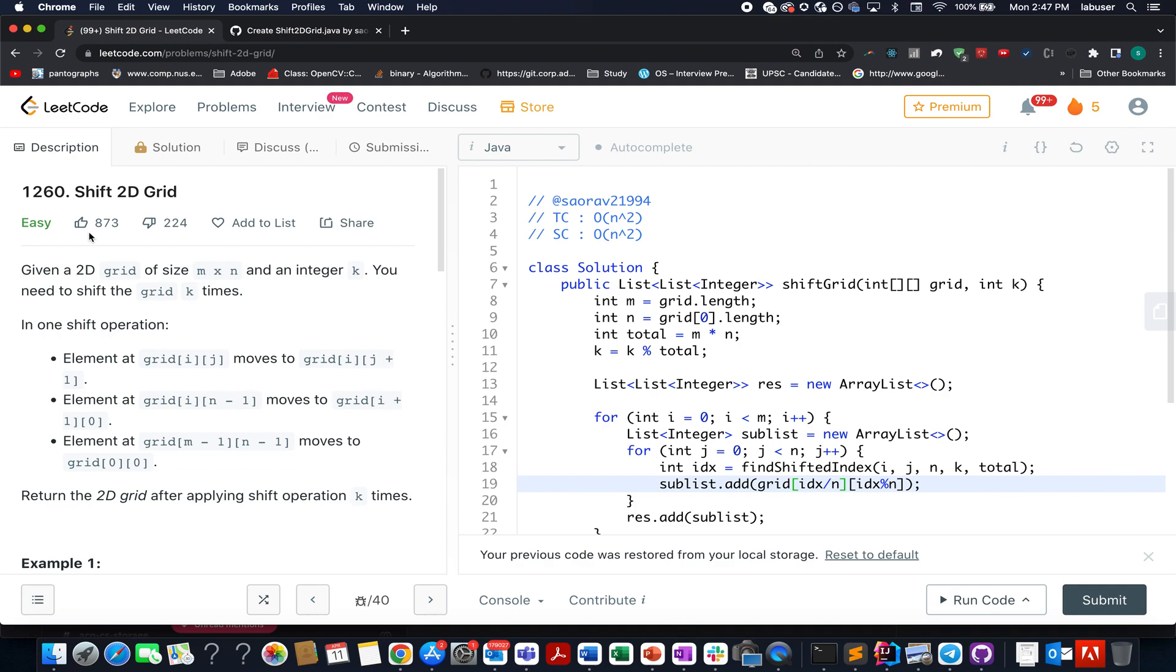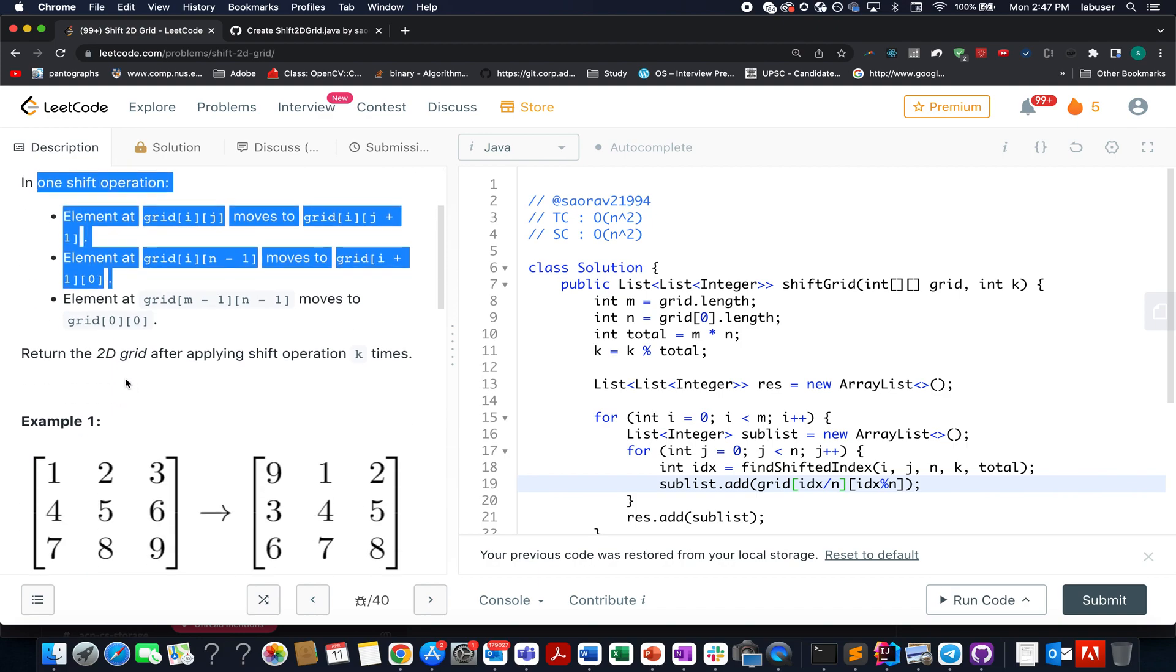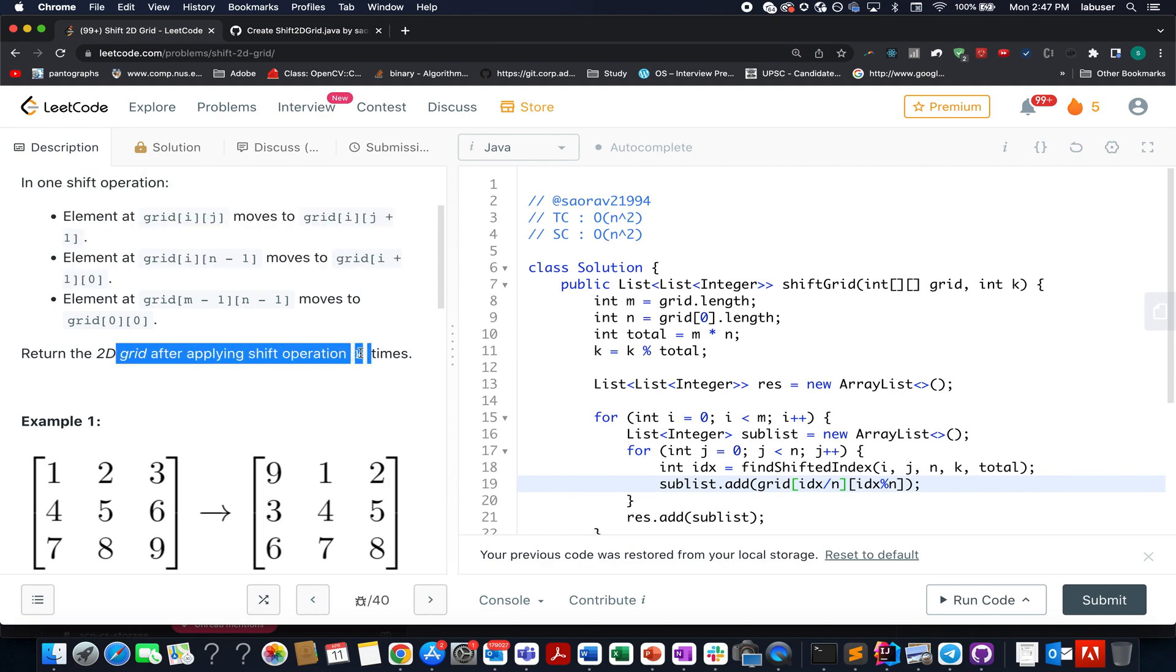The question that we have today is Shift 2D Grid. Here in this question we are given a 2D matrix of size m cross n and an integer value k. Basically what we need to do, we need to shift the grid by k times. Here they have provided us with few rules and we need to return the updated grid after applying the shift operation.